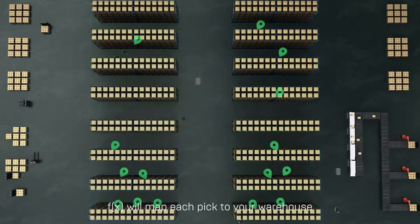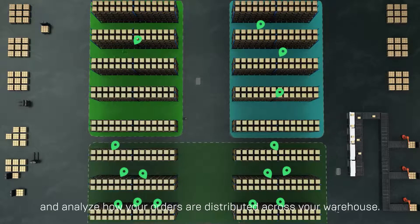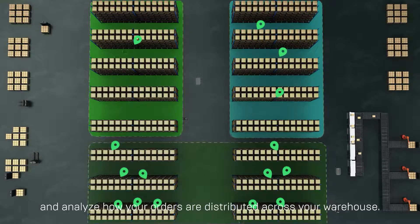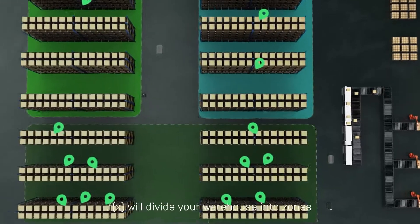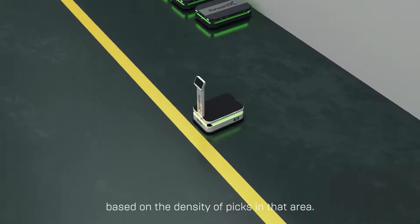After receiving the data, FX will map each pick to your warehouse and analyze how your orders are distributed across your warehouse. Using the analysis, FX will divide your warehouse into zones based on the density of picks in that area.